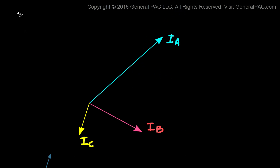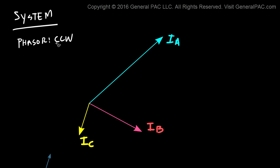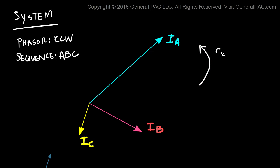Let's describe a few things about our system. First of all, the phasors in our system are rotating in the counterclockwise direction. Remember, this is the direction that a lot of the standards and papers out there always assume for any system. Our system also has an A, B, C phase sequence. These two pieces of information are very important. So as these unbalanced phasors rotate in the counterclockwise direction, we can assume an A, B, C phase sequence.